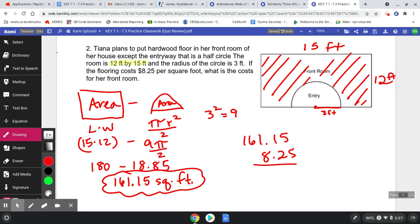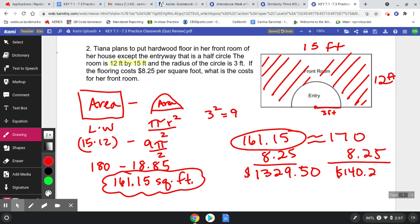161.15 times 8.25 is $1,329.50 if I round up. But think about this: am I going to buy exactly that much floor? If that's my square footage, I'm probably going to round that up - I don't know, to maybe 170 - and have some extra flooring just in case I mess up or we cut one piece wrong or something like that.